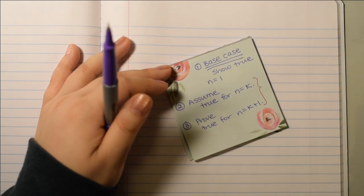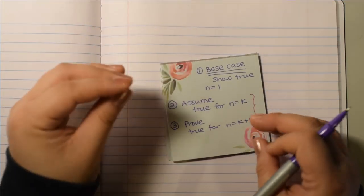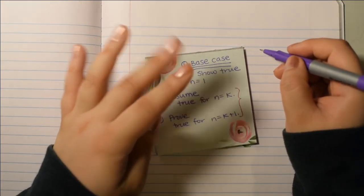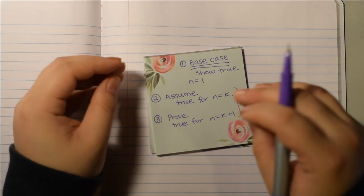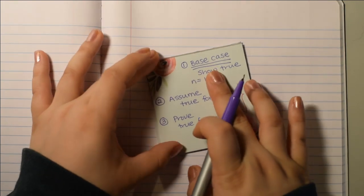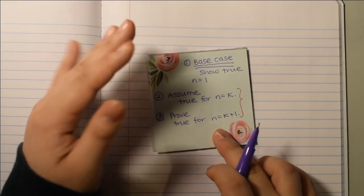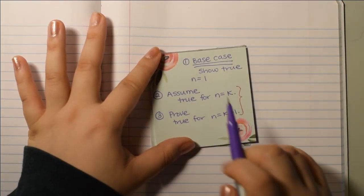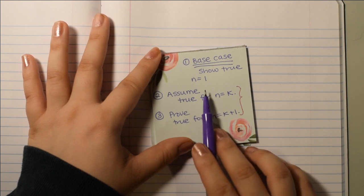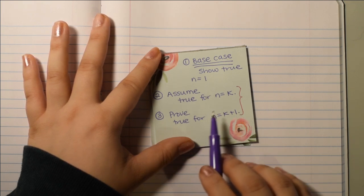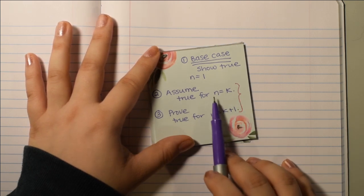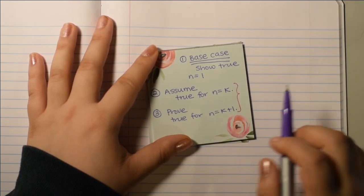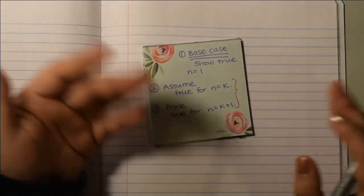So, these two together, steps 2 and 3, are usually called the inductive step. Basically, we're saying we have this base case, this starting point, and we're gonna assume it's true for n equals k. And based on that n equals k, we're gonna prove that next term. So, just from this alone, we've basically shown that if we know n equals 1, whatever it is that we're proving is true for n equals 1, then it is true for n equals 2. But if it's true for n equals 2, then it's also true for n equals 3, and so on.